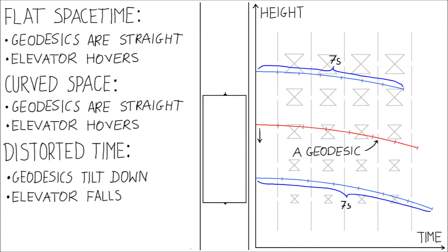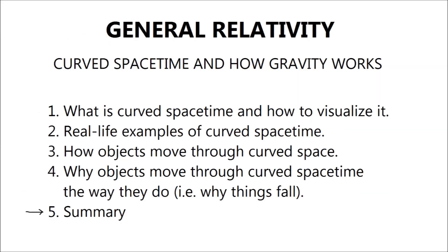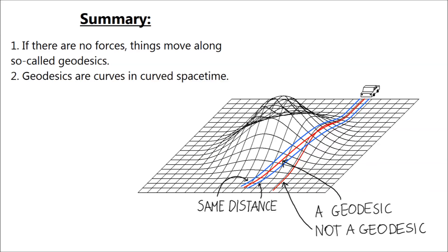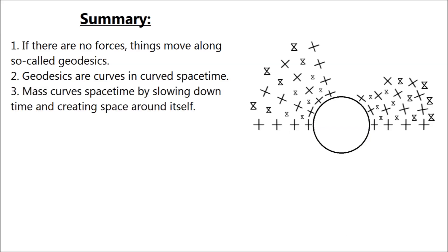That is it. This is why things move towards the Earth when they fall. To sum up, when there are no forces, things simply try to move forward along a geodesic. If space is curved, geodesics may also be curved. Heavy objects curve spacetime by slowing time and generating space around them.